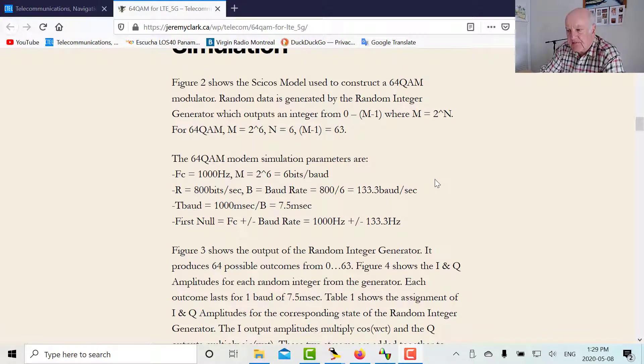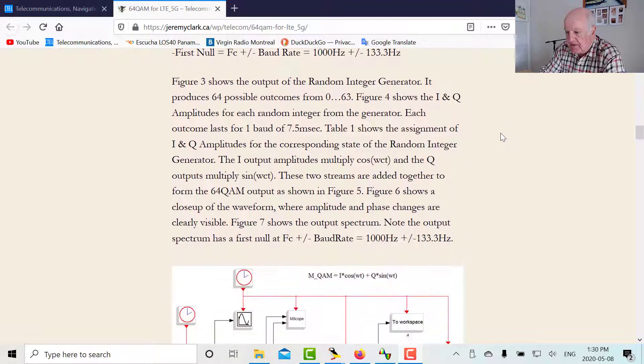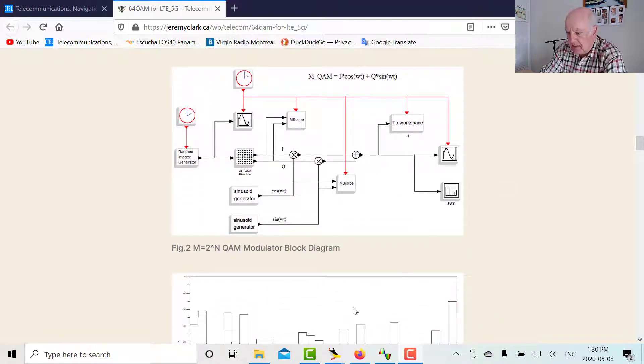Now we're going to see in the spectrum that our first null bandwidth is our carrier plus the baud rate or 1000 plus or minus 133.3 hertz. If I didn't go to a multi-level modulation system, what would happen is the first carrier null would be all the way out at R or six times greater. So essentially by going to six bits per baud, I've reduced my required bandwidth by a factor of six. Okay, so there's the model we're going to use and let's go to it now.